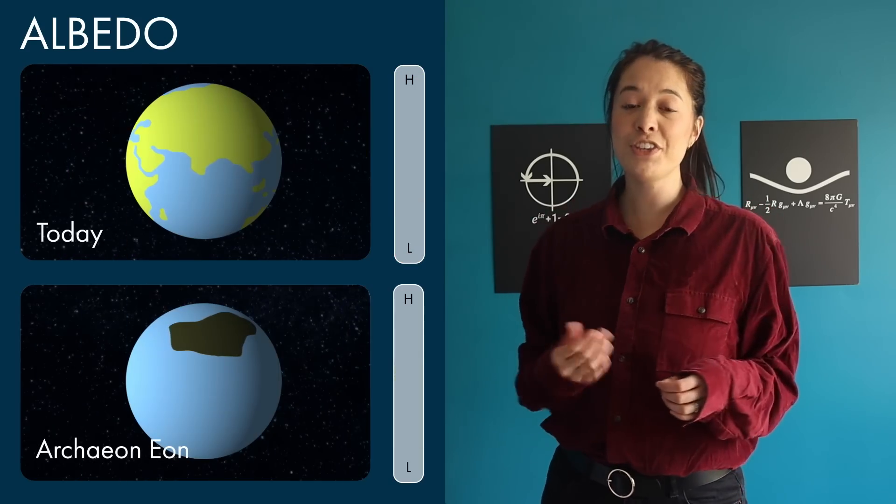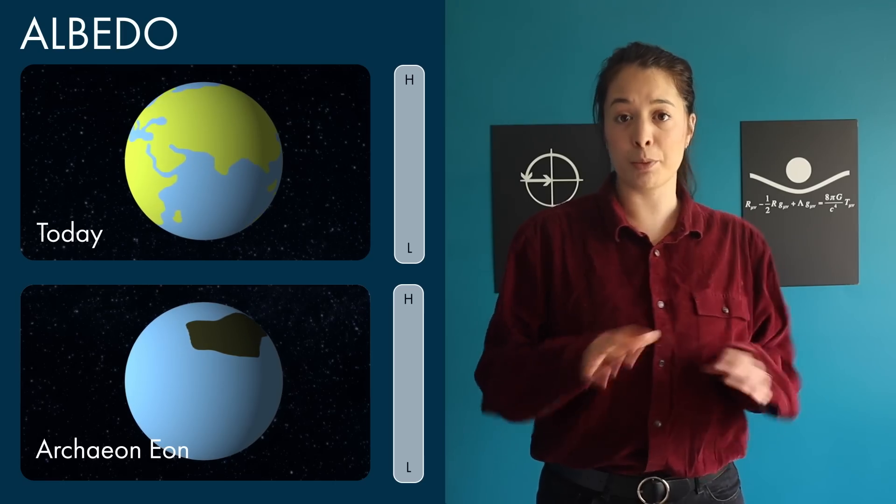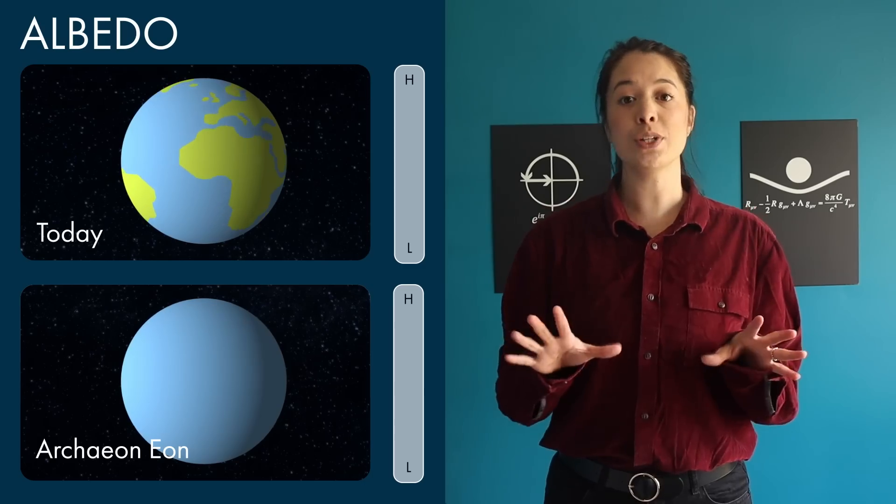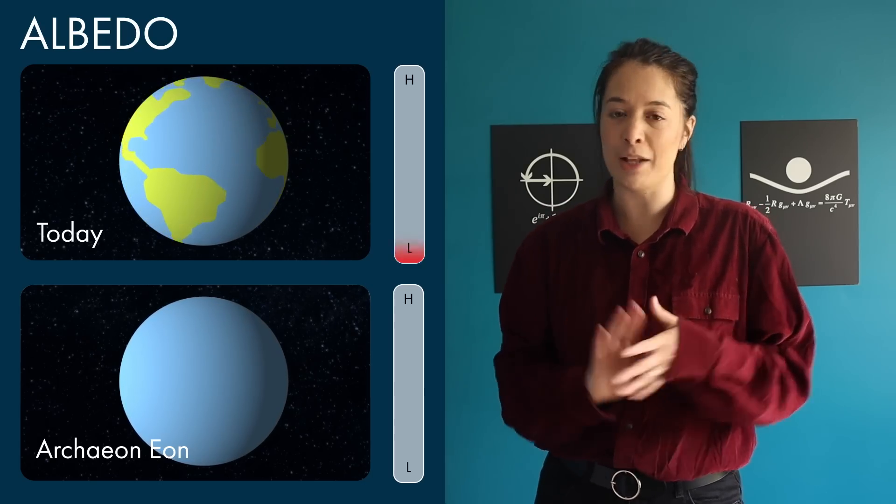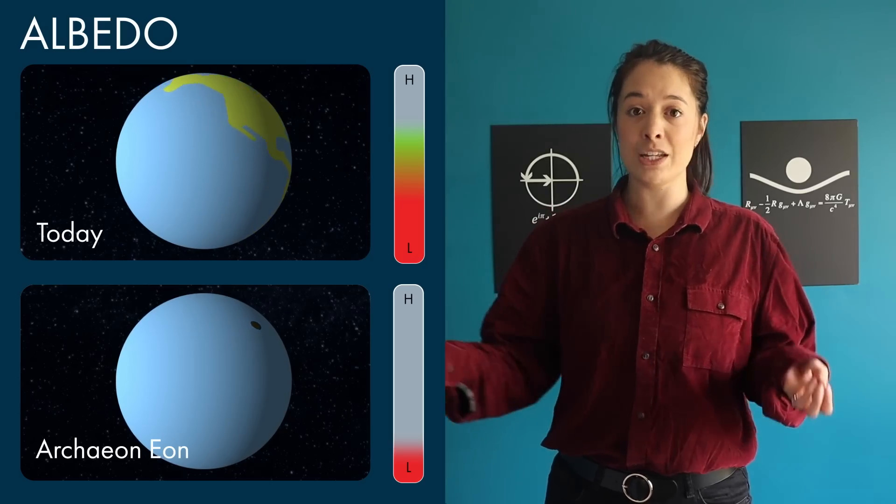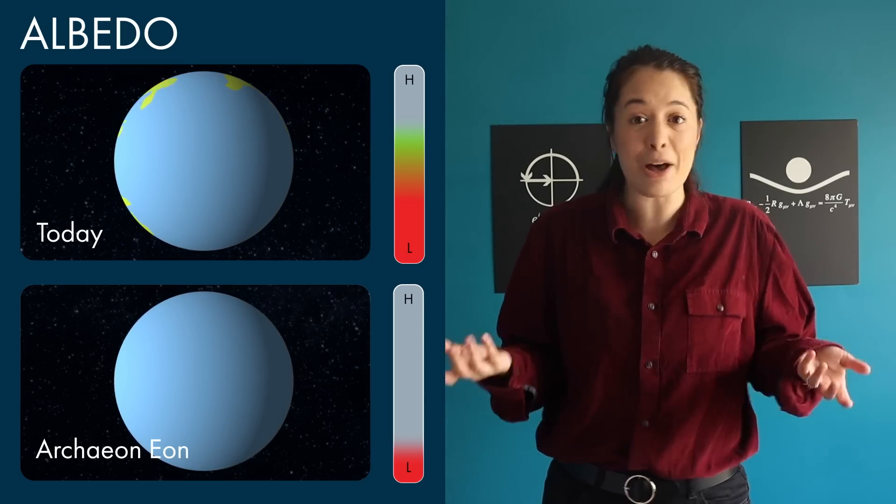Since the surface of the Earth during the Archean Eon would primarily be composed of water and dark black rock from volcanoes, it would cause the planet to have a much lower albedo than it does now. As such, the Earth would have the ability to absorb more sunlight and heat up.